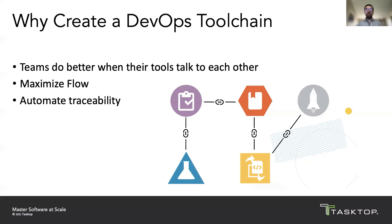Automating traceability is a big one. If you're in a regulated industry — maybe like financial services, healthcare, or automotive — an integrated DevOps toolchain can offload many of the burdensome activities related to compliance, for example by establishing traceability between requirements and the verified implementation.